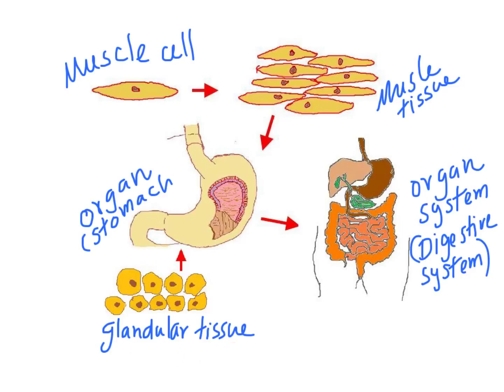The inside wall of the stomach is made up of glandular tissue, which can secrete digestive juices including hydrochloric acid, which is made inside the stomach and helps the digestion process.